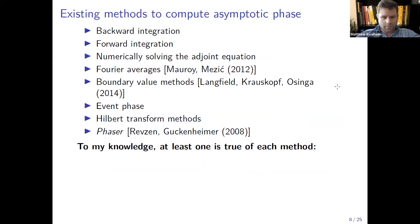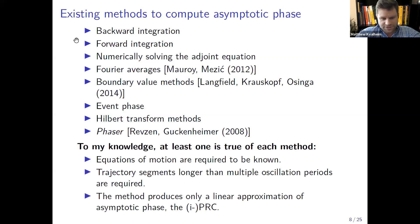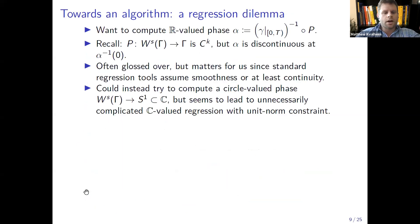So what are the existing methods to compute asymptotic phase? I doubt that this is an exhaustive list but these are the ones that I know about. I don't want to talk too much in detail about all of them but there's a bunch of numerical methods. Some of them require knowledge of equations of motion, some don't. But to my knowledge at least one is true of all of the above methods: either equations of motion are required to be known, or trajectory segments longer than multiple oscillation periods are required, or the method only produces something which is valid basically just on the limit cycle, either the phase response curve or an infinitesimal version of it. What our goal for our algorithm is to require none of these things.